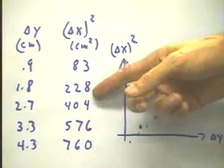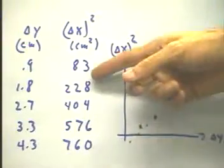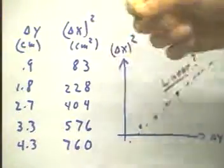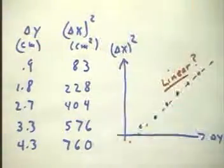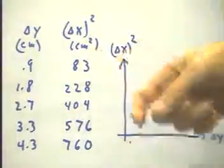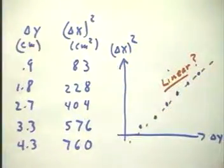But the rest of these, the change from here to here to here to here, each of these changes in delta x squared is pretty much the same. From 83 up to 228 isn't that much different. This is around 140, the rest around 170 or 180.